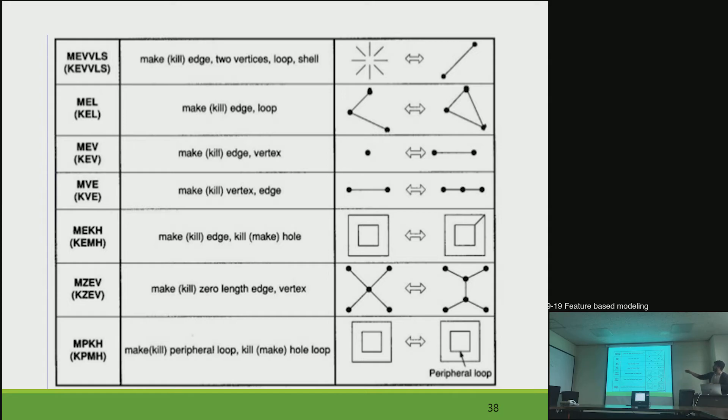And MEV means make edge vertex. So an edge is connected with a vertex, so two vertices, one edge. But when you say kill edge vertex, one vertex and edge is killed and you are remained with only one vertex. And other examples for them.